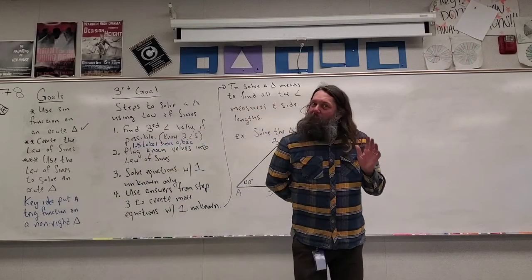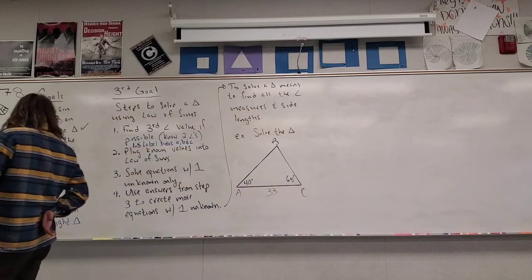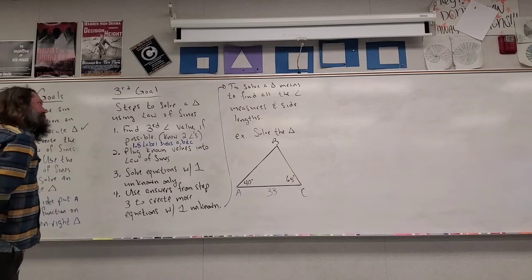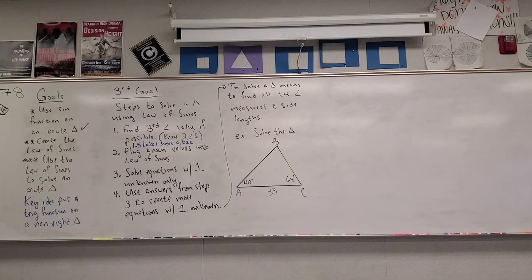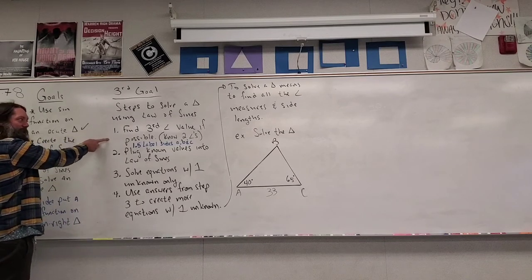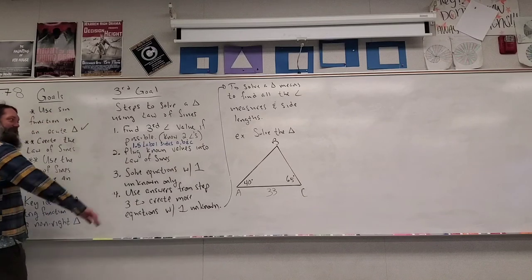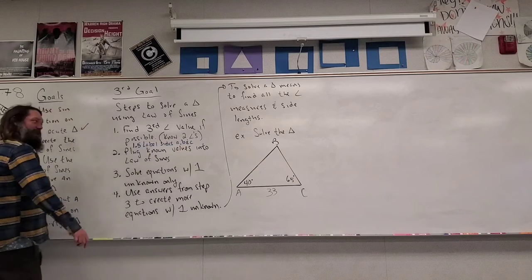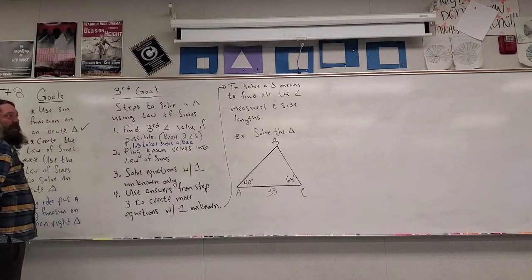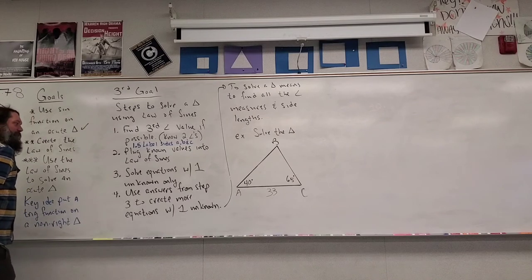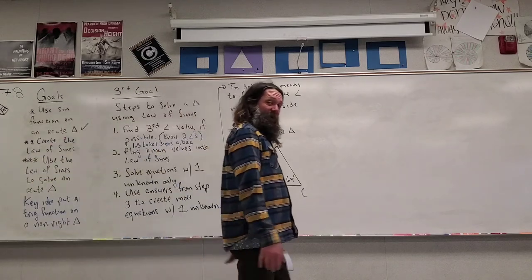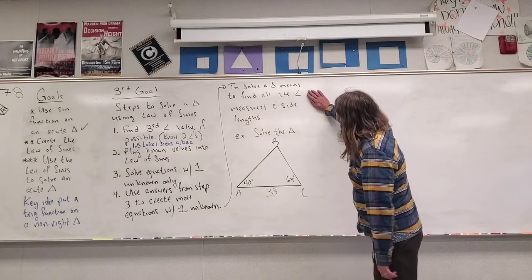I'm back for the last time. We're going to do our third goal: use the Law of Sines to solve an acute triangle. Here are the steps. Step one: find the third angle value if possible — we need to know two angles. Step one and a half: label the sides A, B, and C. Step two: plug in the known values into the Law of Sines. Step three: solve equations with one unknown only. Step four: use answers from step three to create more equations with one unknown. Remember, solving a triangle means finding all angle measures and all side lengths.